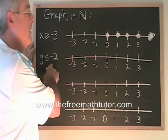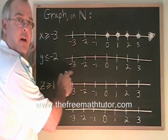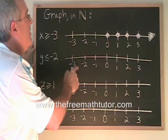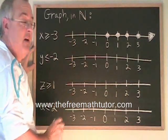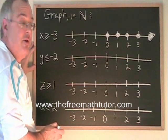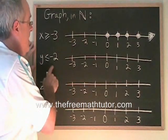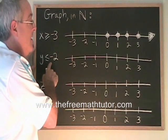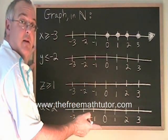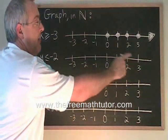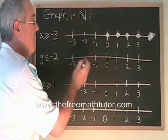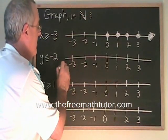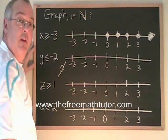y less than or equal to negative 2 would include the numbers over here, but again, these negative numbers are not natural numbers. So this might seem like a trick question, but there are no natural numbers that are less than or equal to negative 2. So the answer is empty set. There are none. We can leave a blank number line to express this, or we can use the empty set symbol, which is this circle with a line through it.